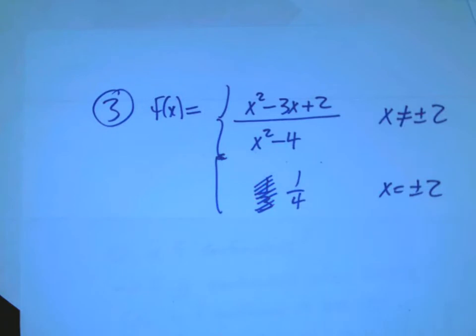At the end of last time, I had this function. I've changed this value, but I had this rational function. It's defined by this formula everywhere but at plus or minus 2, and it's 1 fourth at plus or minus 2.